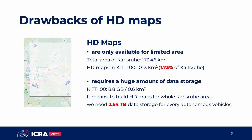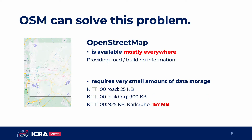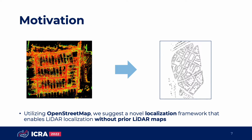For example, this is a map of Karlsruhe, Germany. As you can see, only 1.73% of Karlsruhe is covered by LiDAR data, and 2.54TB of storage is needed for every vehicle that wants to drive in Karlsruhe. However, OpenStreetMap can be a good solution. It is available in mostly everywhere and needs only 167MB to cover the whole Karlsruhe area. Therefore, we try to localize a vehicle utilizing only OpenStreetMap without using prior LiDAR maps.